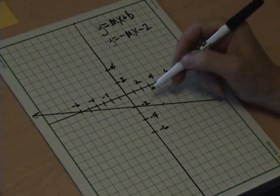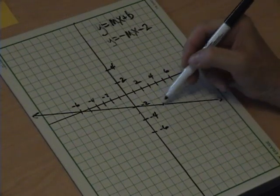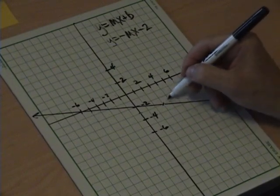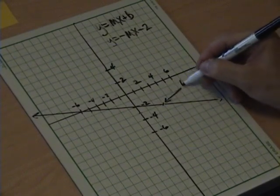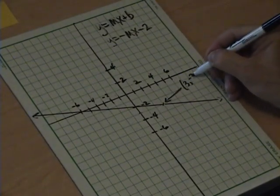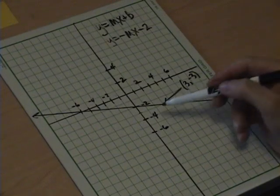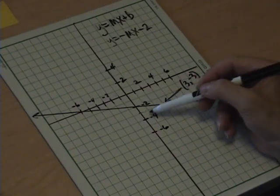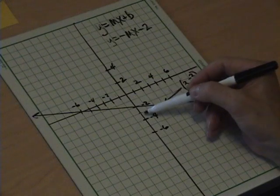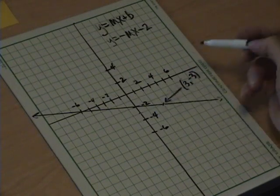So, what we did is we went down one to this point here, which is on our line, and the point is 3, negative 3. But, how did we get there? We went from 0, negative 2, over to 3, negative 3. We went down one, and over one, two, three.